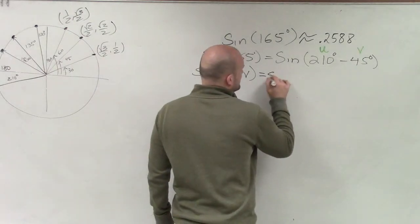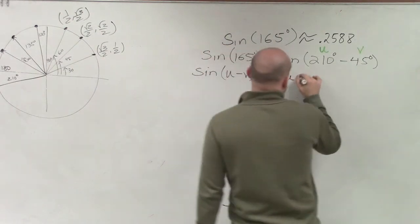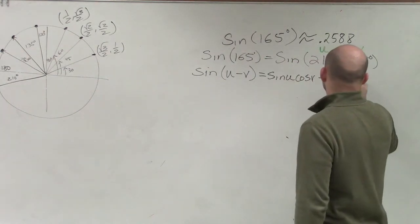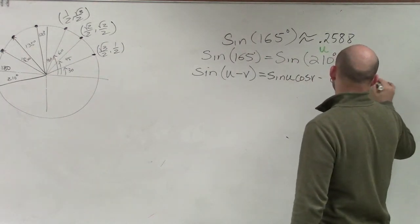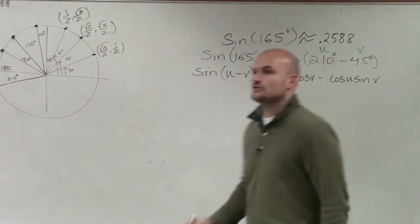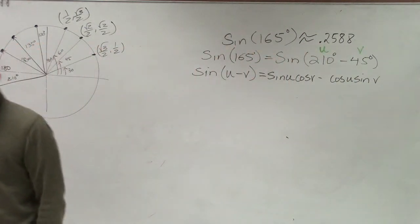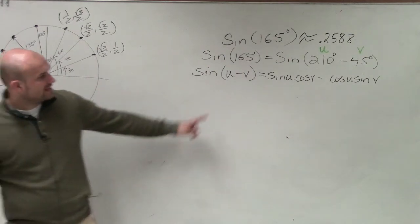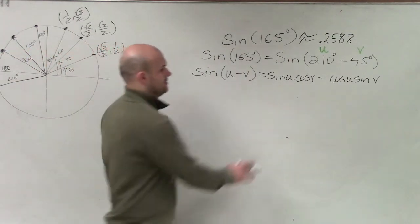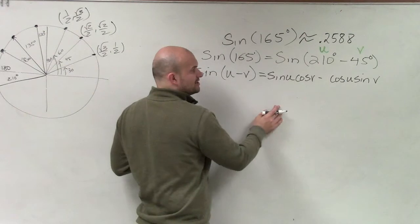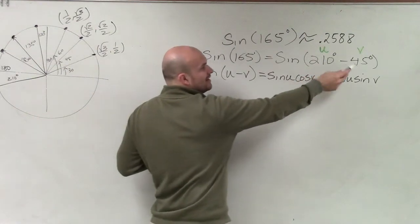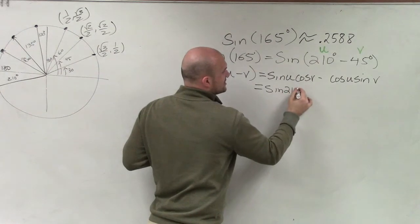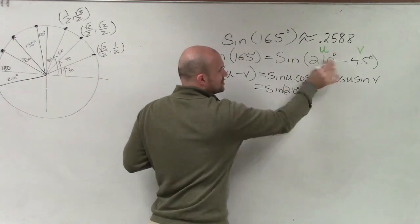So this one goes sine of u times cosine of v minus cosine of u times sine of v. That is your formula. So now, to solve for this, what you guys are simply going to do is now let's plug in our values. I said u is 210 and v equals 45. So therefore, I have the sine of 210 degrees times the cosine of v.